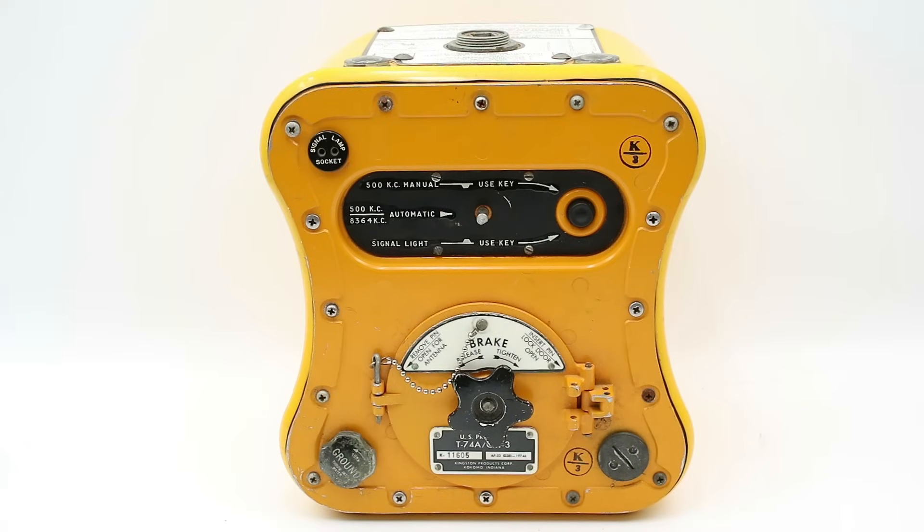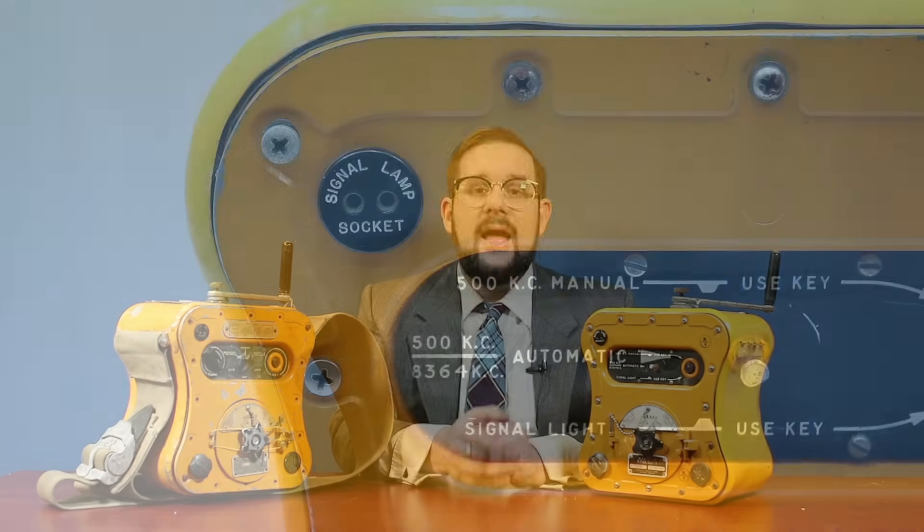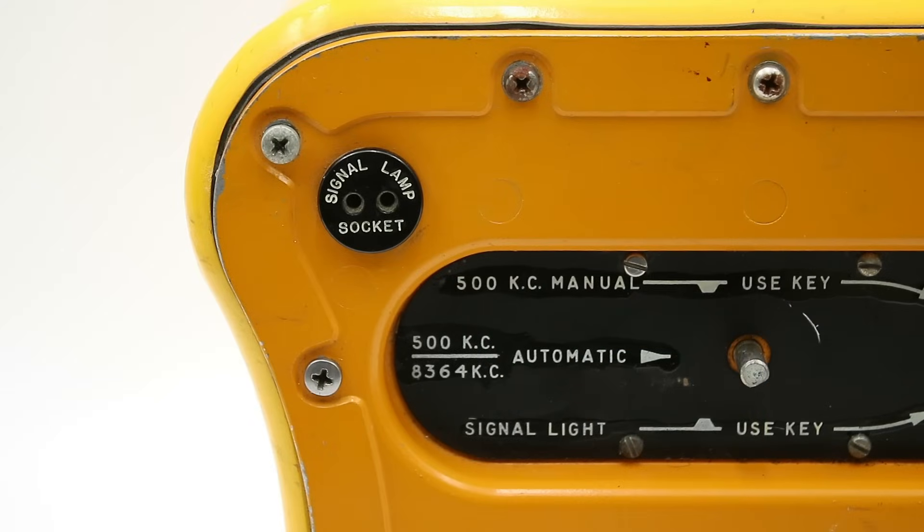Now after the second world war, the Gibson girl underwent further modification and was re-designated the AN CRT3. Now while the basic function was the same, the radio now transmitted at two different frequencies, 500 kilohertz as before and 8,280 kilohertz or 8,364 kilohertz for the B variant like this one, with the mechanism automatically swapping between the two every 40 to 50 seconds depending on how fast you turn the crank.